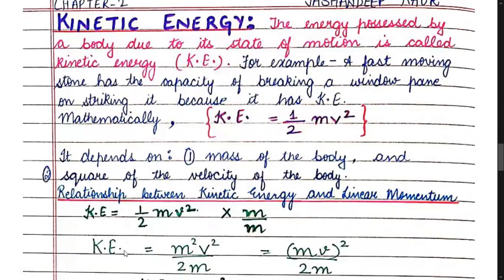We have now covered two forms of potential energy: gravitational and elastic. Let us now learn about kinetic energy. The word kinetic means motion, so kinetic energy means the energy produced due to the motion of a body.